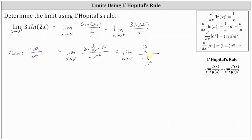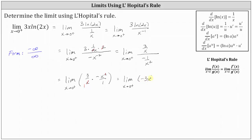Let's write this quotient as a product. This is equal to the limit as x approaches 0 from the right of 3 divided by x times the reciprocal of negative 1 divided by x squared, which is negative x squared divided by 1. Notice we can simplify: x simplifies to 1, and x squared simplifies to 1 factor of x, giving us the limit as x approaches 0 from the right of just negative 3x. Performing direct substitution, negative 3 times 0 is 0, so the limit is equal to 0.